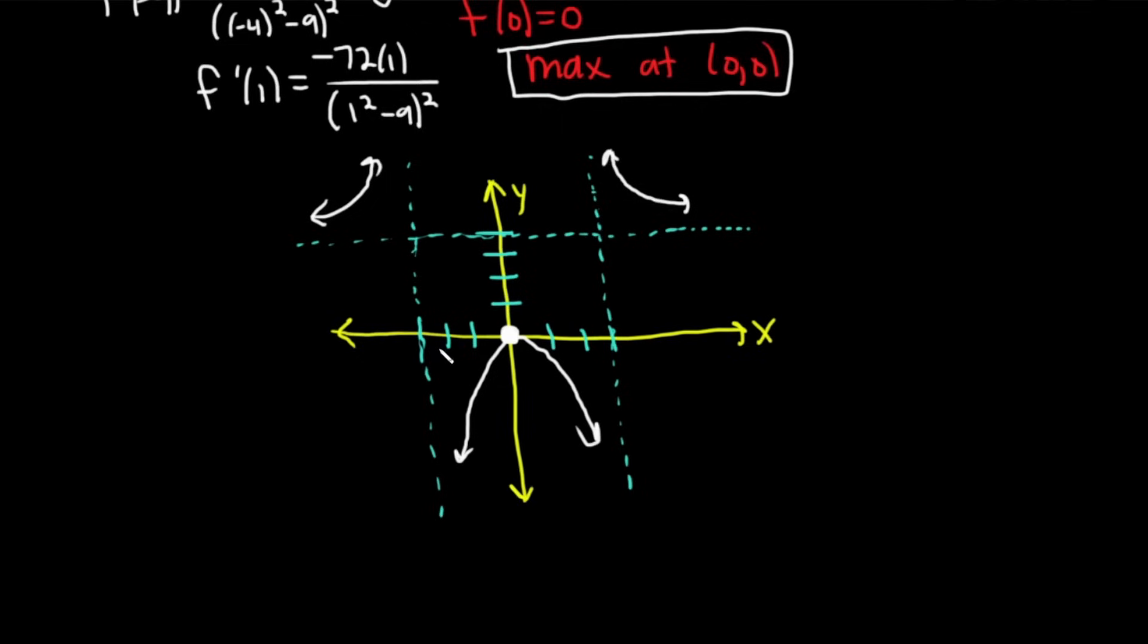If you would have found the second derivative, you would see it's concave up on the left and right, and concave down in the middle. But it really was not necessary in this particular example. Hopefully this video has taught you some mathematics, and if you enjoyed this video, make sure to check out other videos on Chegg. Until next time, good luck.